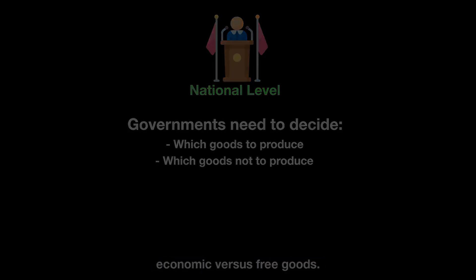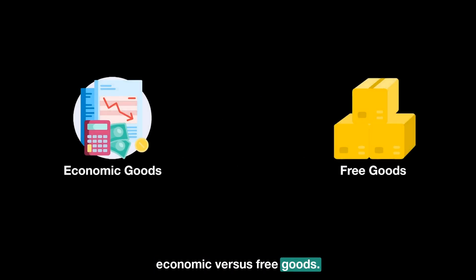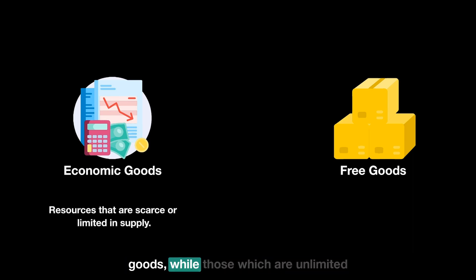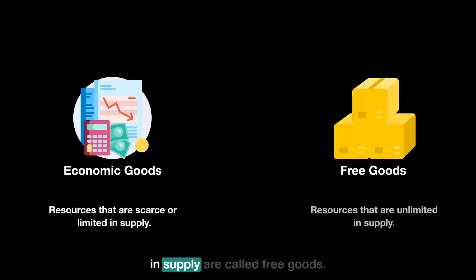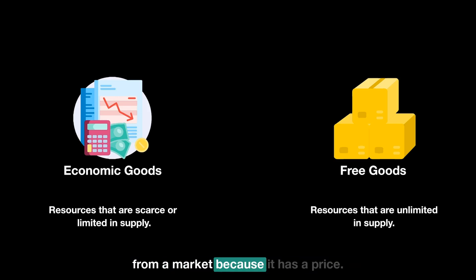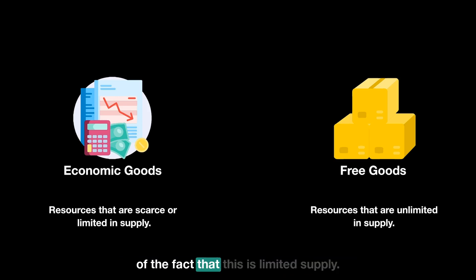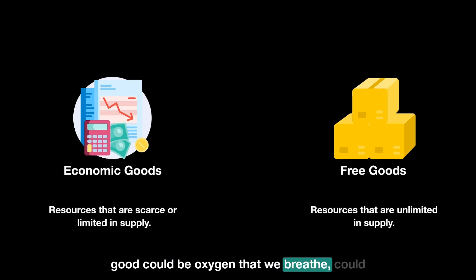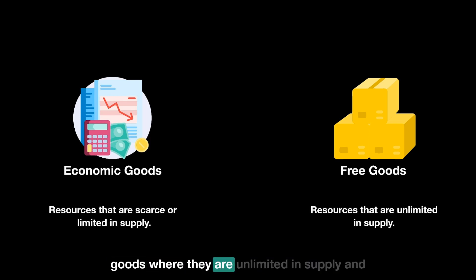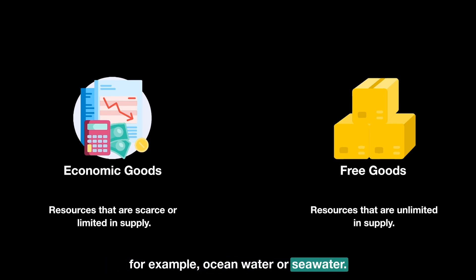Because of scarcity, we come to a very important concept: economic goods versus free goods. Resources that are scarce — limited in supply — are called economic goods, while those unlimited in supply are called free goods. A good example of an economic good is anything you buy from a market, because it has a price. A free good could be oxygen we breathe or sea water, which are unlimited in supply and therefore have no price.